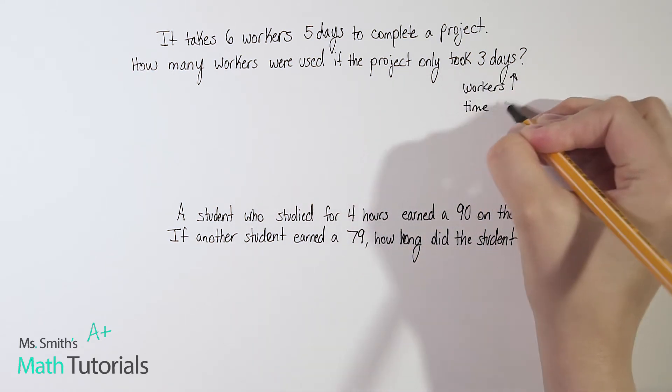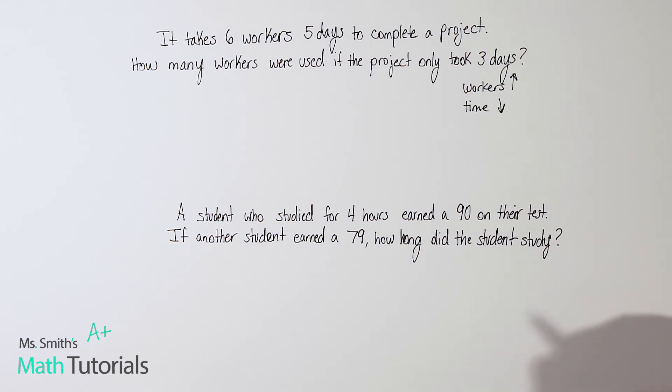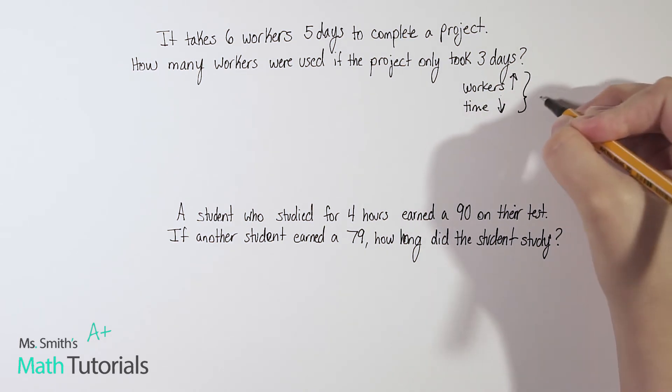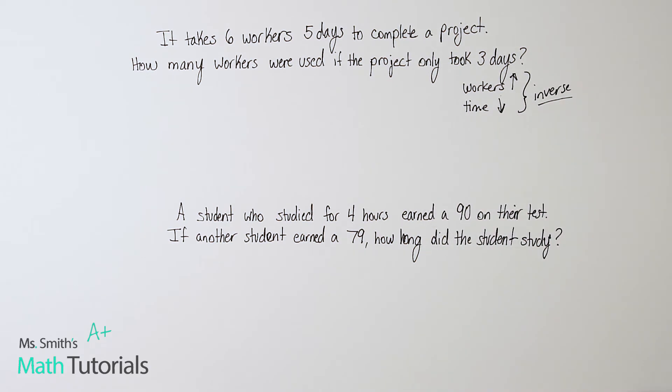Let's think, as the number of workers increases, what's going to happen to the time it takes to do the project? Well, our time would go down, right? The more people you have on a job, the less time it takes to do the job. So because we have that difference there, as one goes up, the other goes down, that tells me we're going to be using the inverse.